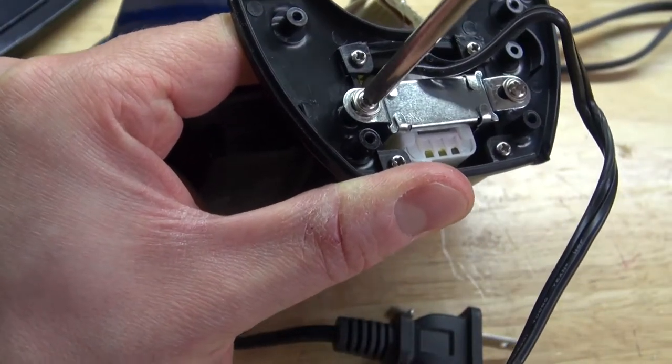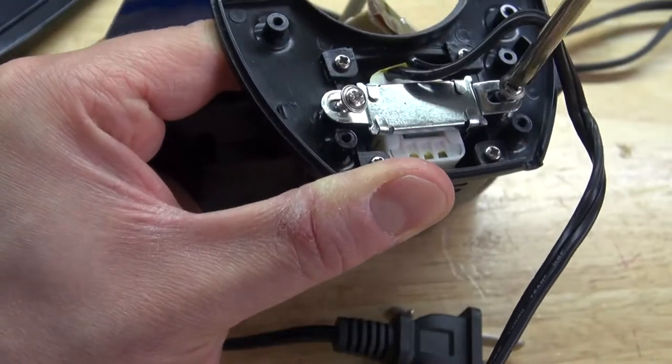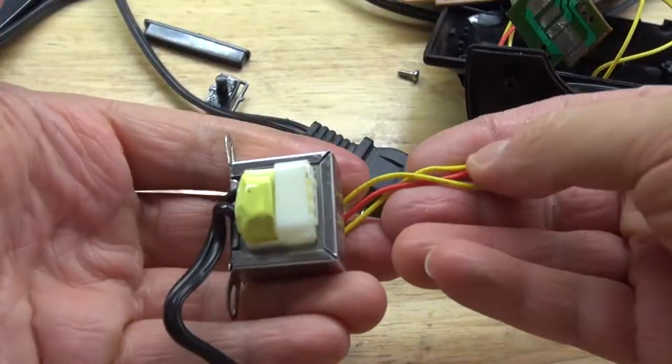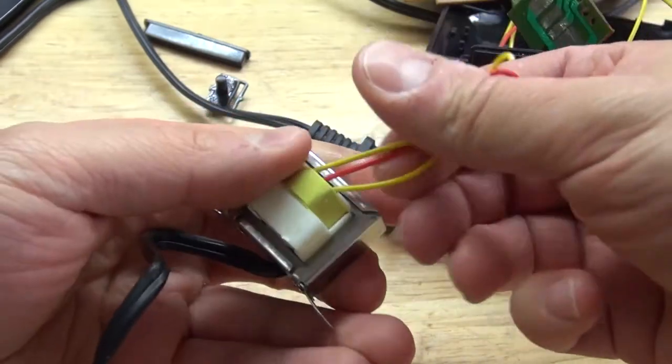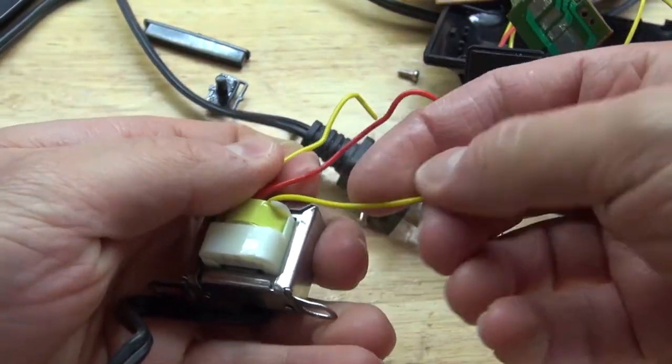And now remove the screws of the transformer. Pull it out and cut the wires. And there I have a little transformer that can be very useful for a lot of projects.